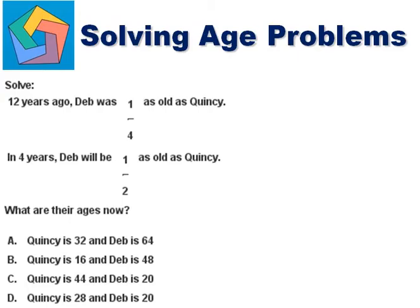Solve. Twelve years ago, Deb was one-fourth as old as Quincy. In four years, Deb will be one-half as old as Quincy.